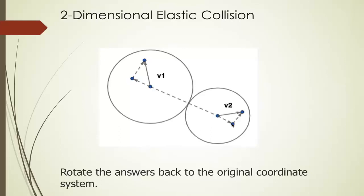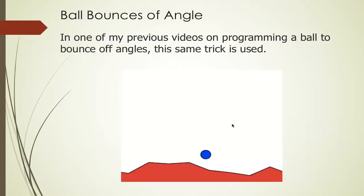If you've seen my previous video, I did one on how to bounce a ball off angles — I'll put a link on the screen. In that video it's the same trick: if you want to solve a problem at an angle, you rotate it so it's flat, solve the easy problem, and then rotate it back to get the solution. This is exactly the same idea.